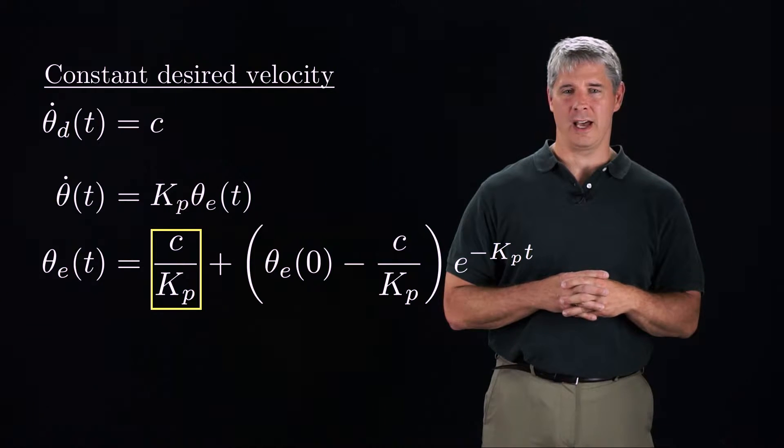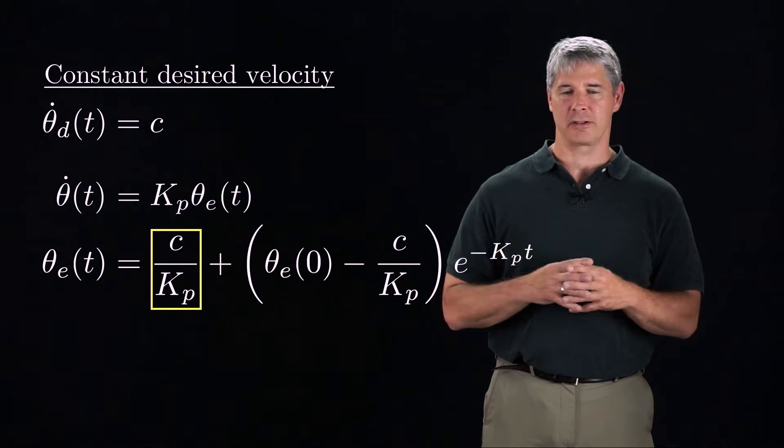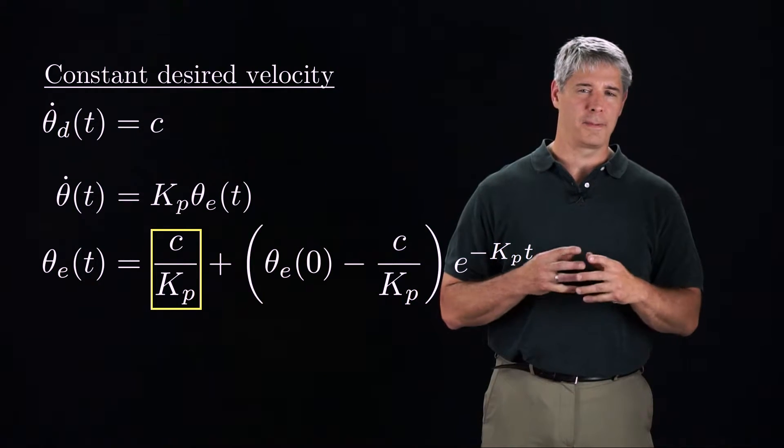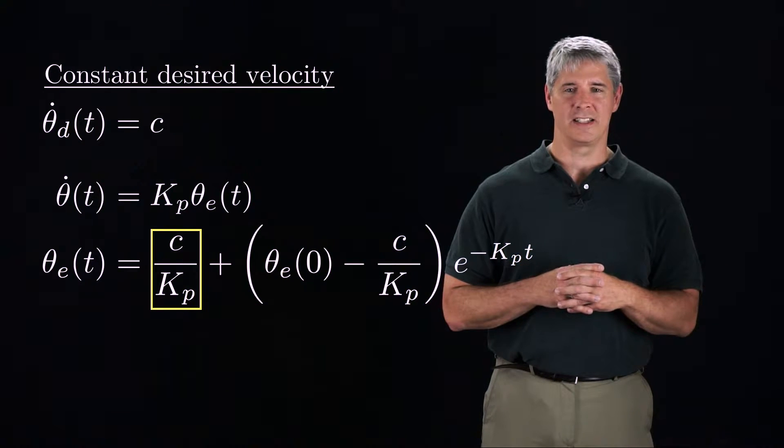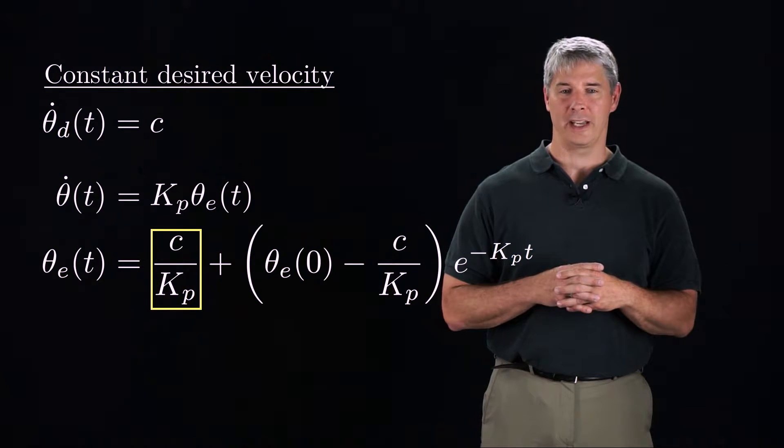In the previous video, we saw that for the task of tracking a trajectory with a constant velocity, a proportional controller results in non-zero steady-state error, c over Kp.